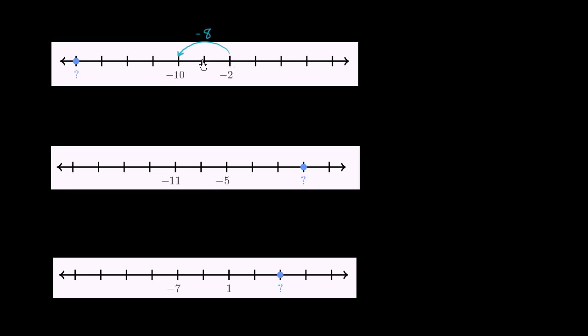And so if we move 2 to the left, that's the equivalent of subtracting 8. So if we move 2 to the left again, that's subtracting 8 again. So this must be negative 18. And so if we move 2 to the left again, that also must be subtracting 8. Negative 18 minus 8 would get us to negative 26.